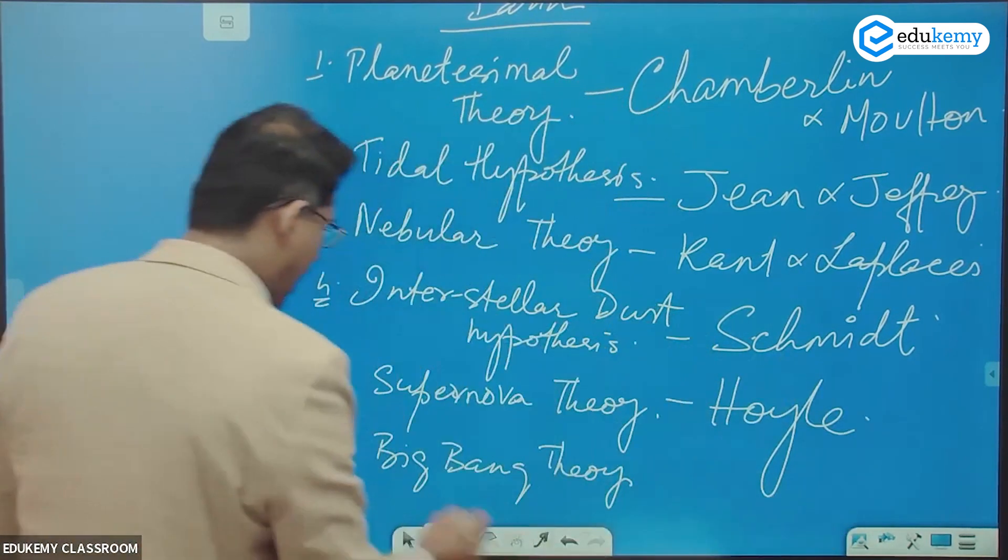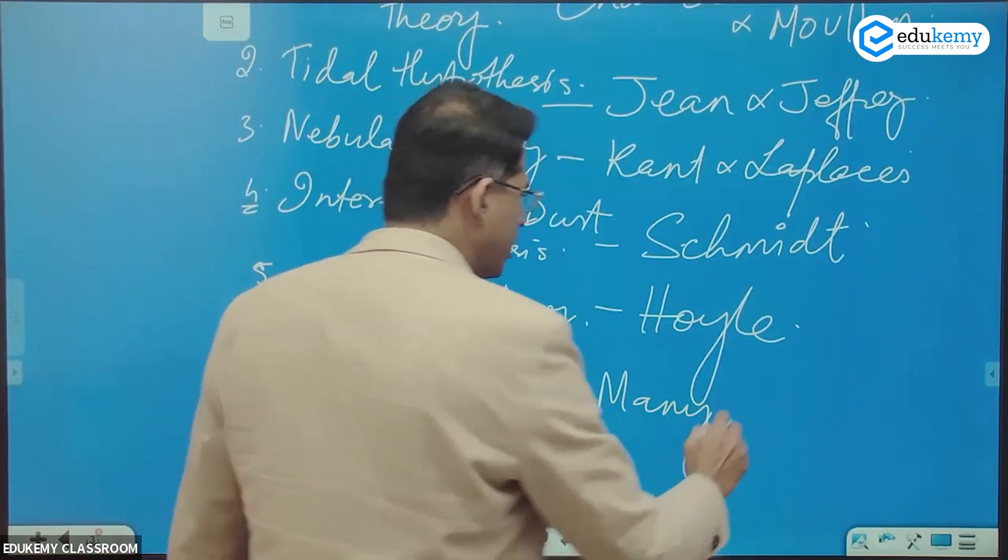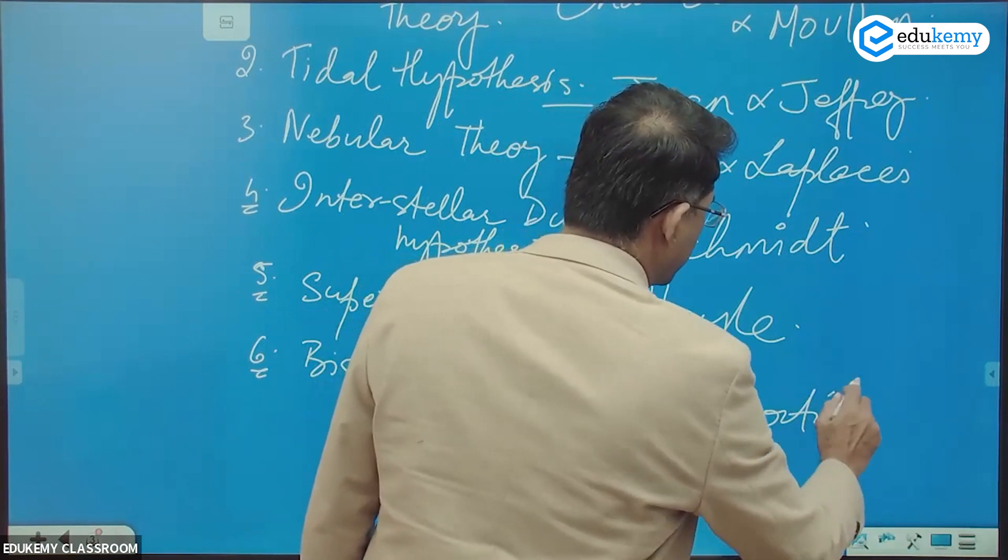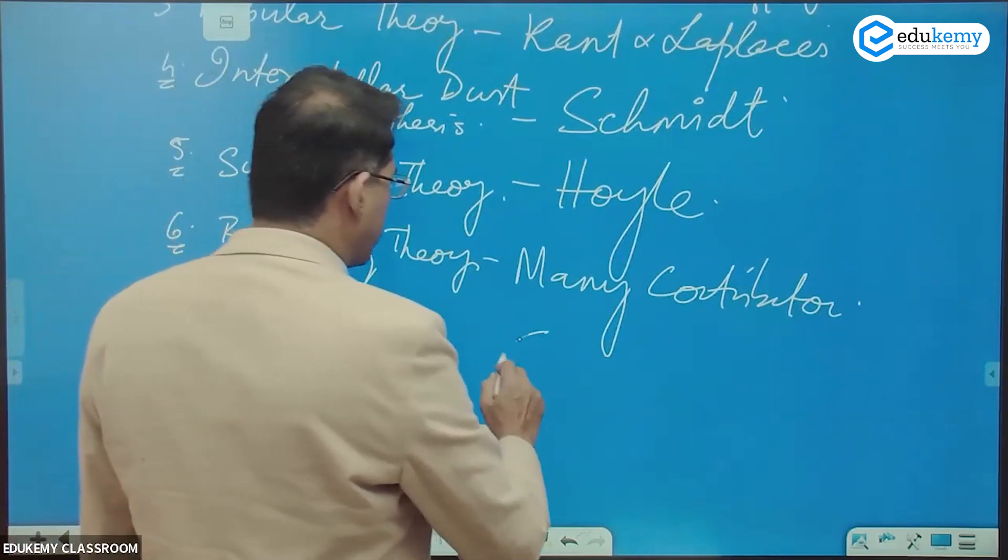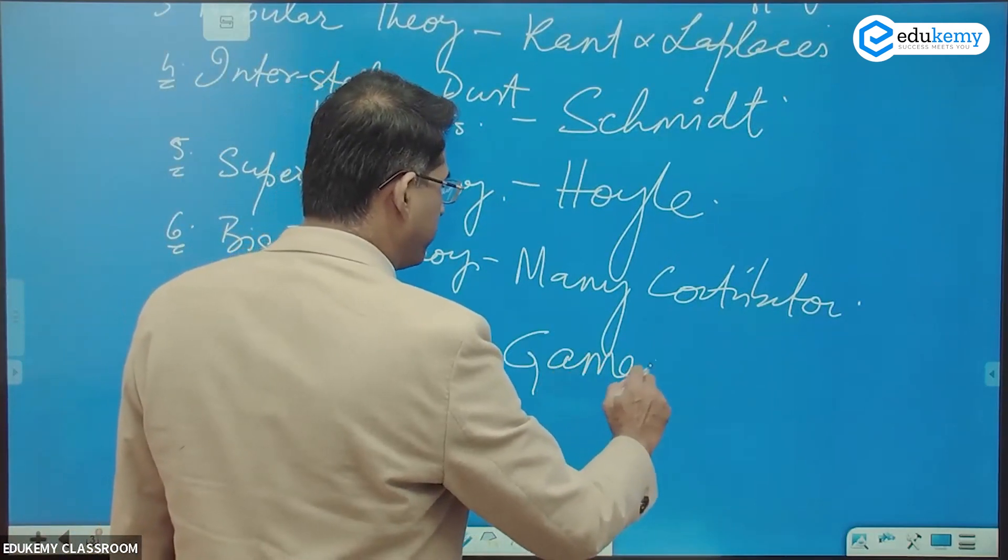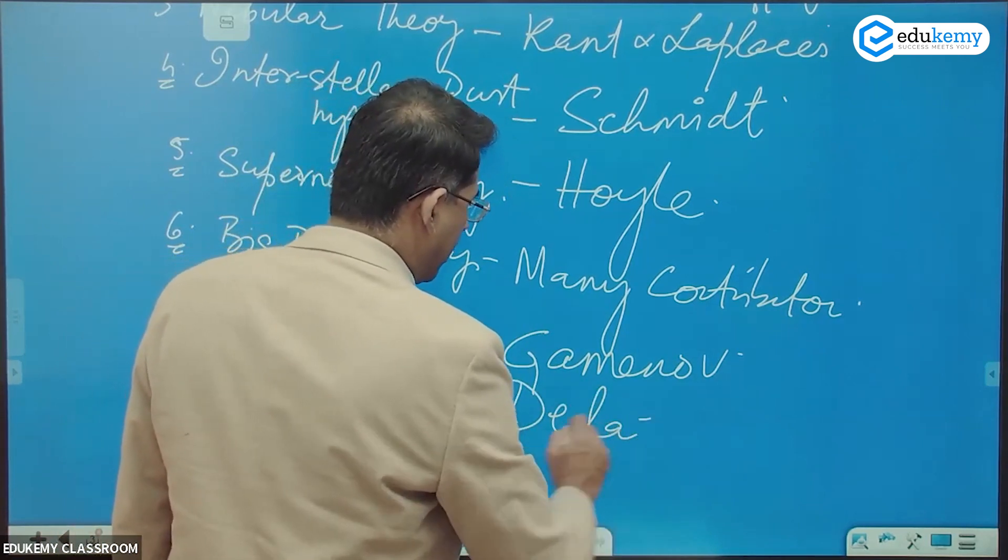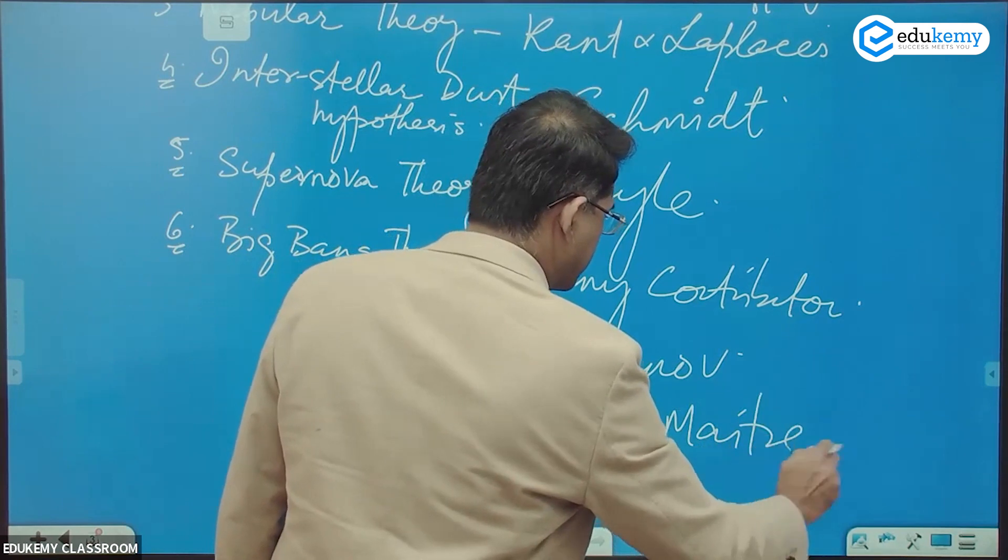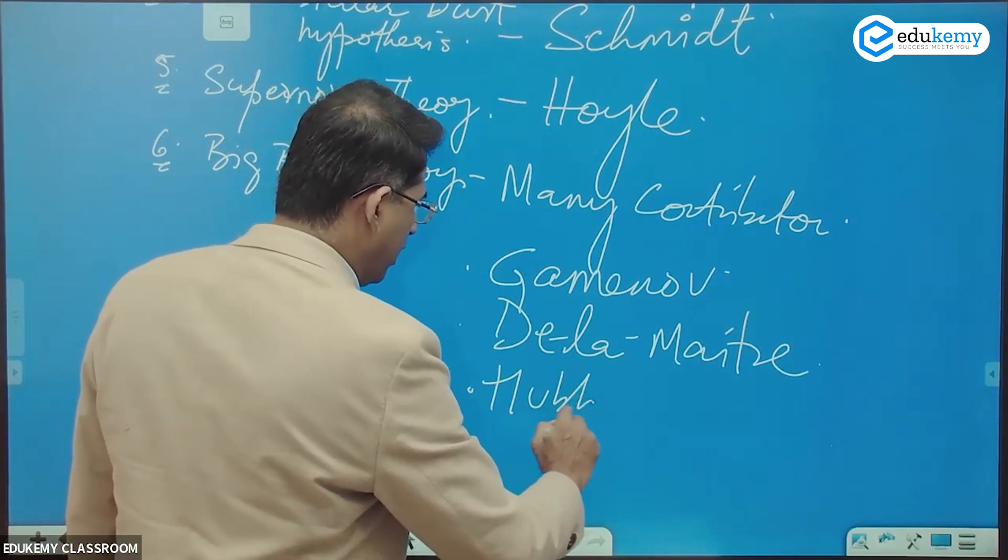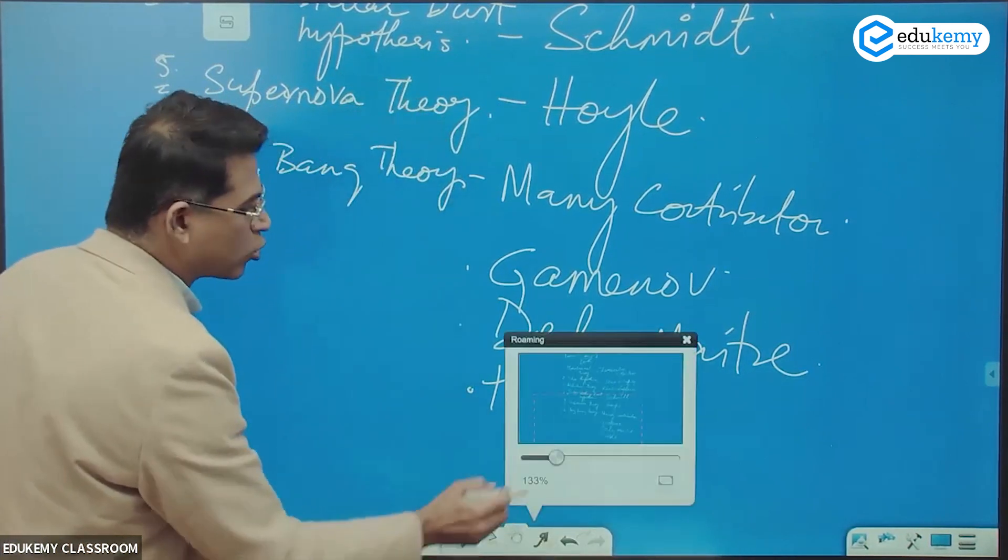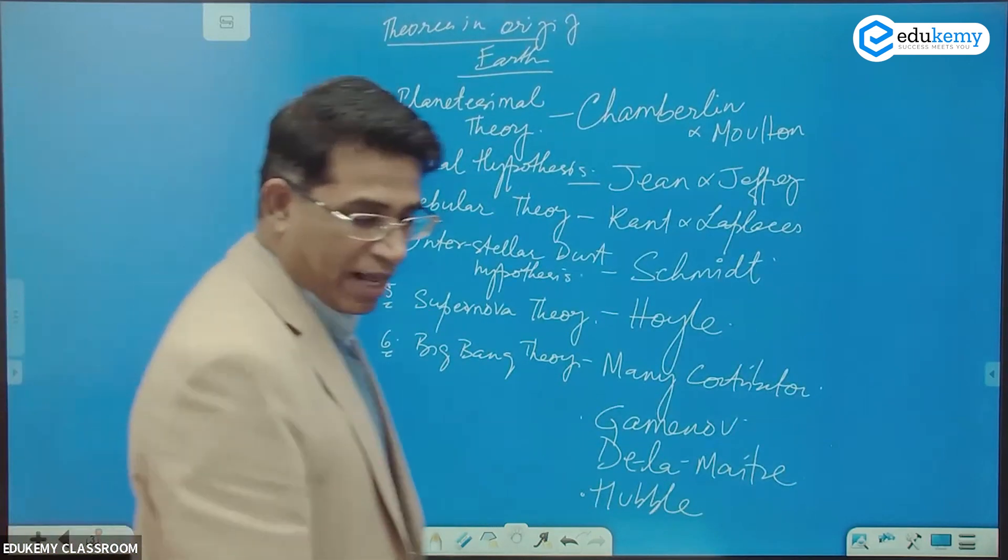And Big Bang theory - there are many contributors. Some of the famous names: Gamow is a famous name, de Maitre is another famous name. We have one contributor as Hubble. After him the telescope was named Hubble Telescope. So write down these names, please.